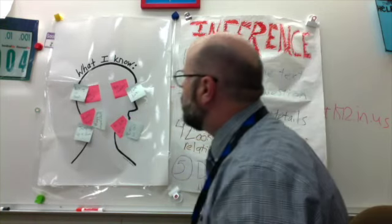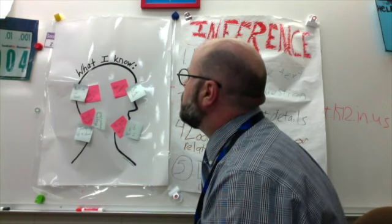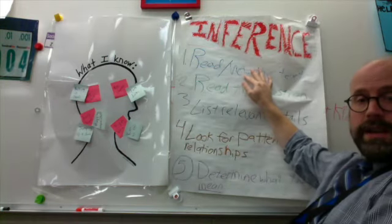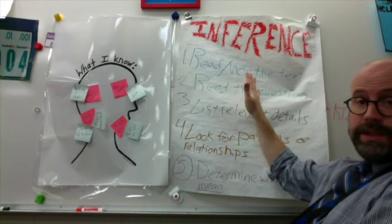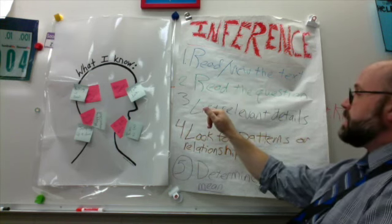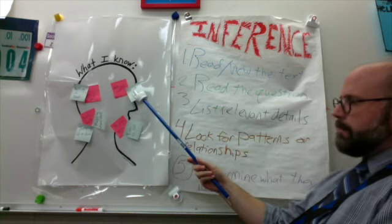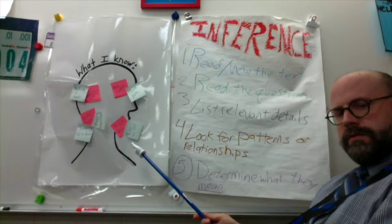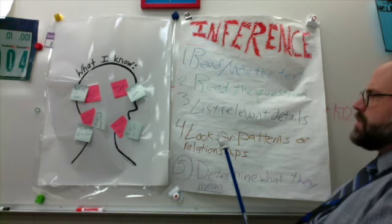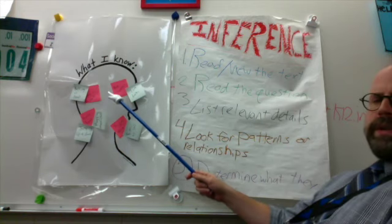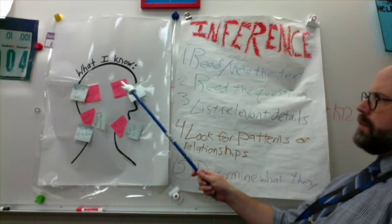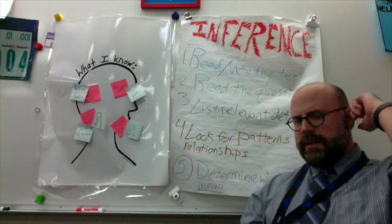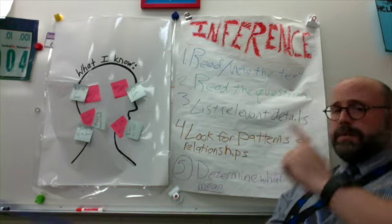So, we've read or viewed the text, we read the question — what's the season — and we've listed relevant details: it's dark at 7 a.m., they were huffing on their hands, they were jumping up and down, hugging themselves, and they ran to the bus. And number four, we look for patterns or relationships. I put the text details on the outside of the head and my background knowledge in pink on the inside. I know that at 7 a.m. it's dark — it's not summertime. I'm using text clues mixed with my background knowledge, ruling out summer.